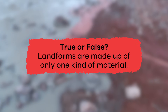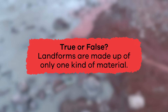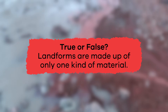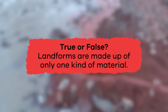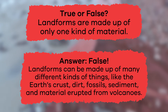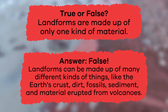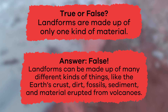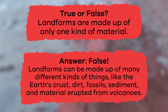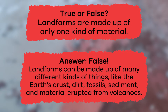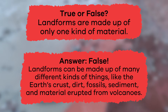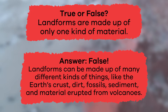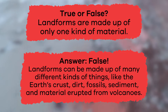True or false? Landforms are made up of only one kind of material. False! Landforms can be made up of many different kinds of things, like the Earth's crust, dirt, fossils, sediment, and material erupted from volcanoes.